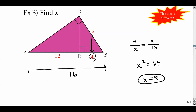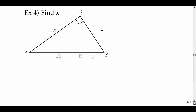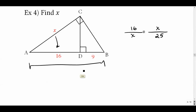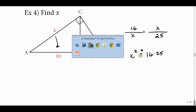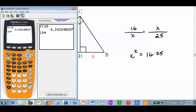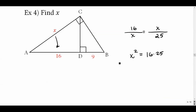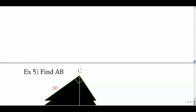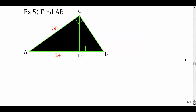Example 4 goes to the other side. We're looking for x using the same leg version of the theorem. Put x in the bottom-left and top-right, use 16 as the number closest to it, and use the whole base of 25. So x² = 16 × 25 = 400, giving x = 20.